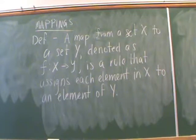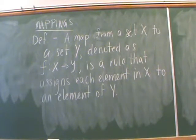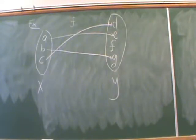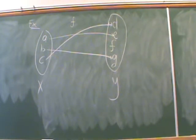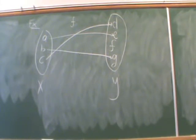A map is a rule that associates elements from one set to another set. If we have a set X and a set Y, the map assigns elements from X to elements of Y. Here's a basic example where set X has three elements and set Y has four elements. The function F maps elements A, B, C over to elements in Y — for example A goes to E, B goes to G, and C goes to D.